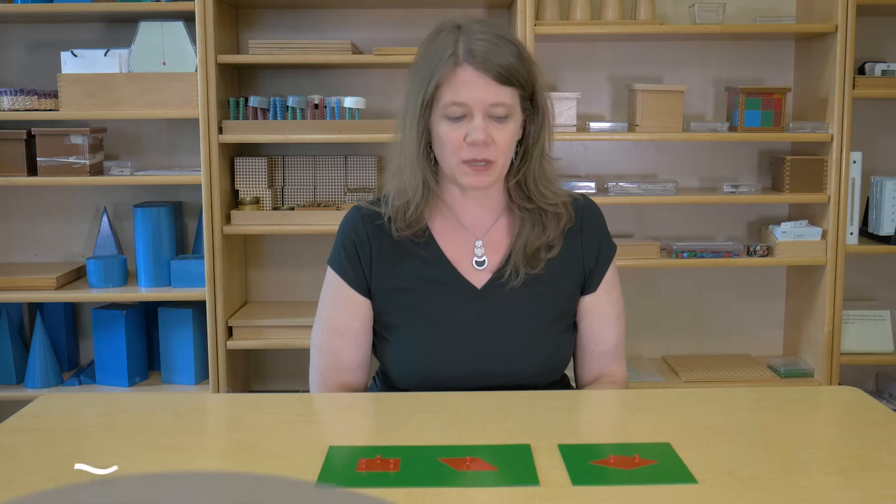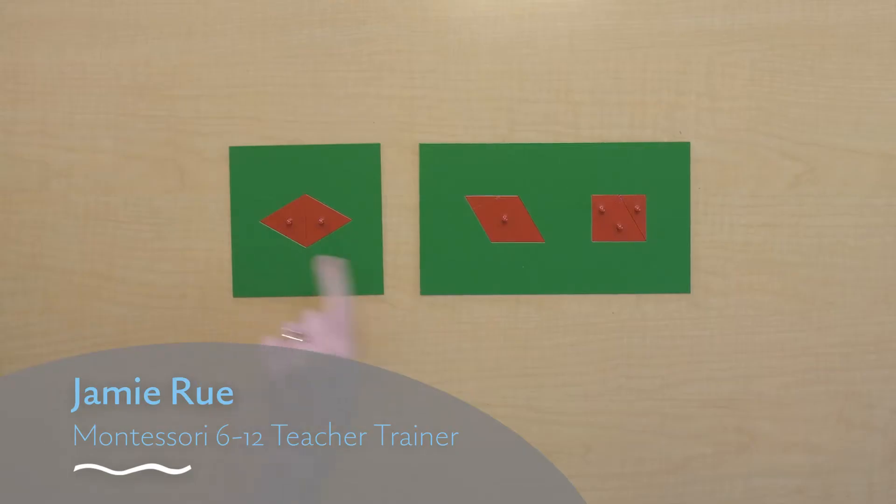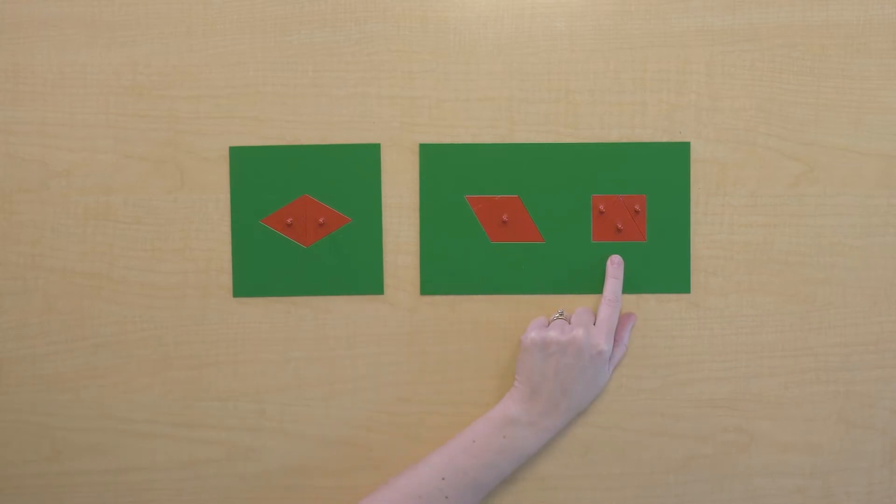All right, let's take a look at these plates today. What shapes do we have here? Looks like we have a rhombus, another rhombus, and a rectangle.